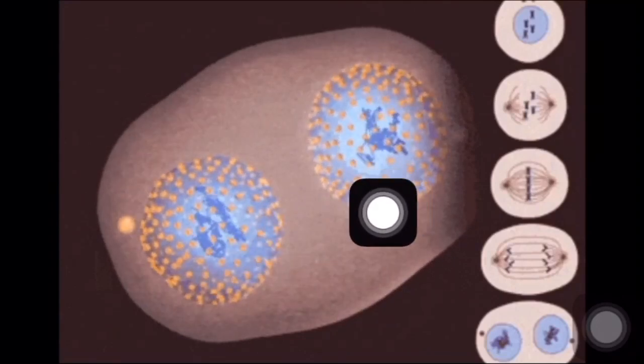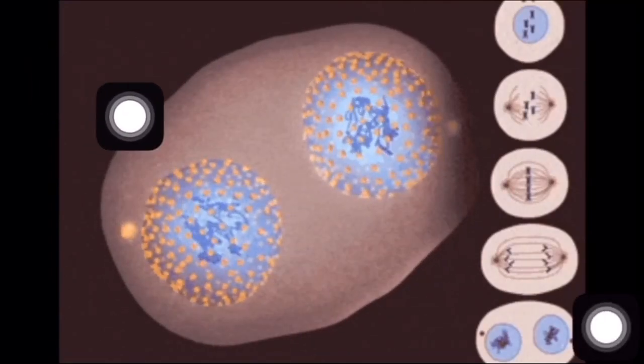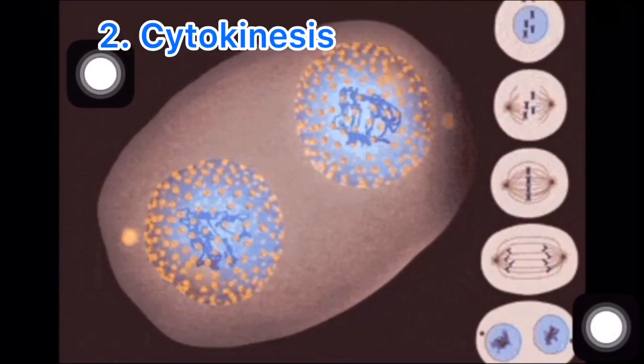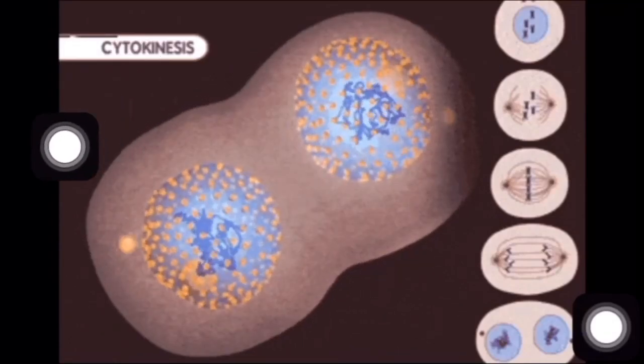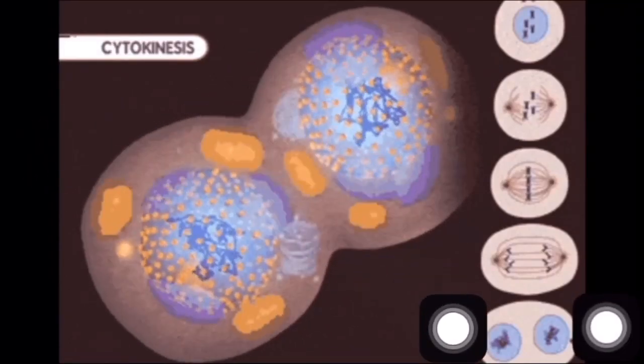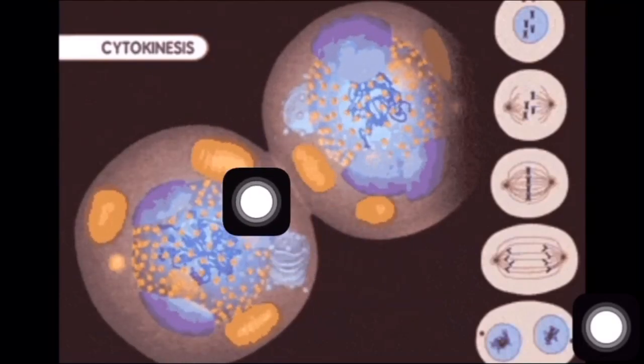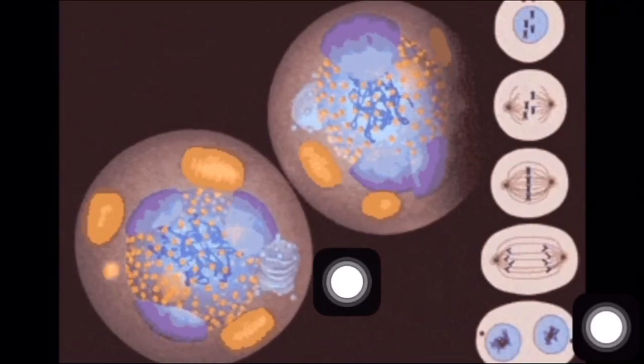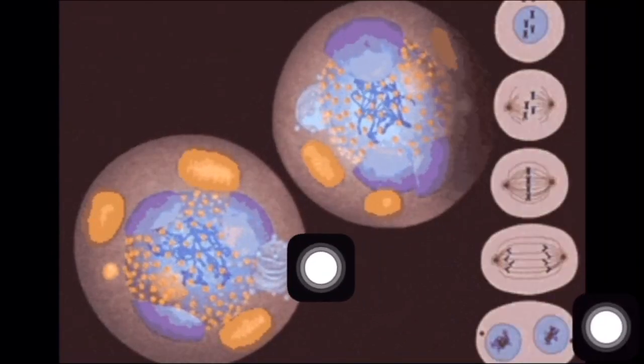Then the second stage of mitosis starts - that is cytokinesis - in which the cytoplasm and nuclear membrane start to split or divide into two parts. And after the cell division is complete, the other cell organelles appear to be visible; they become visible and the two complete identical cells looks like this.